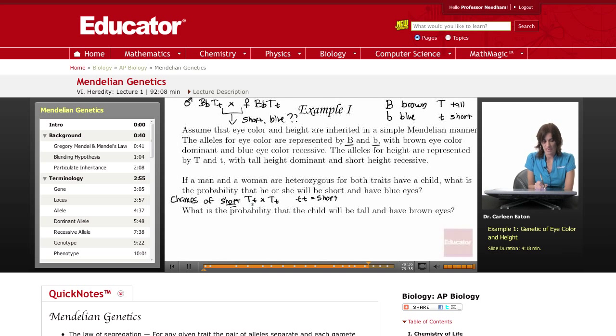And in order to be short the child would have to have both little t little t. What are the chances that the father will donate a little t? Well one out of two. What are the chances that the mother will donate a little t? One out of two.